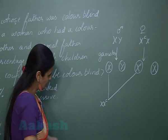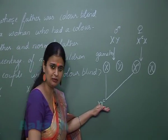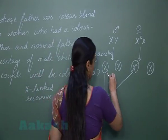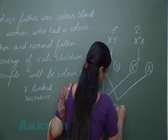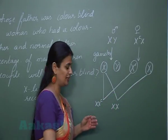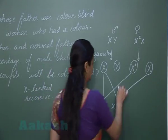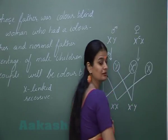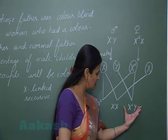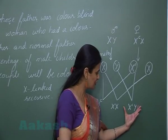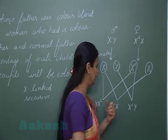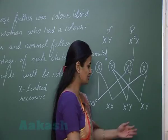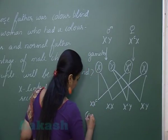With this fusion, a carrier female is formed. With the next fusion, a normal female is produced. The third combination gives a diseased male, and the last combination gives a normal male.